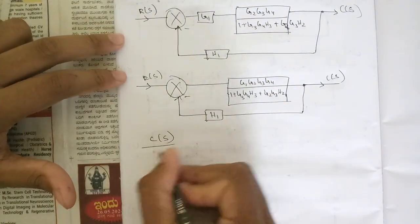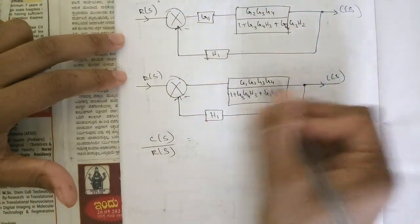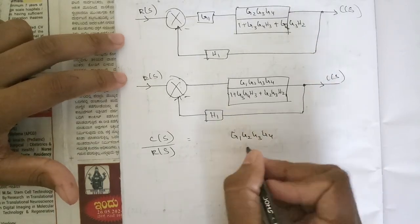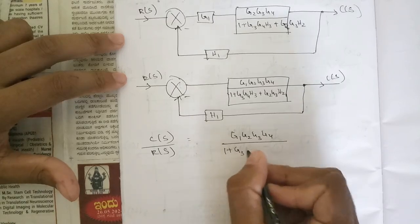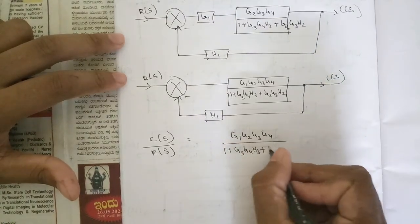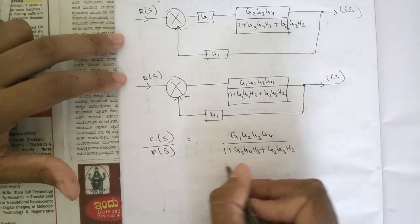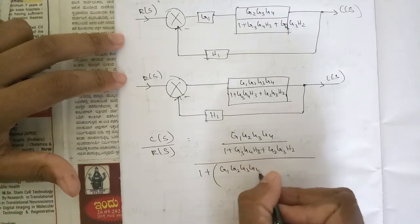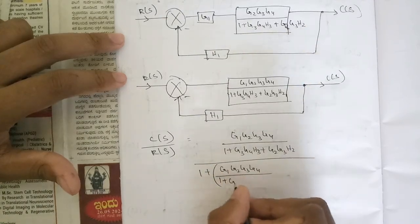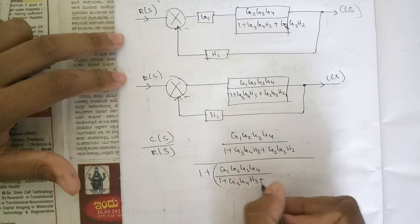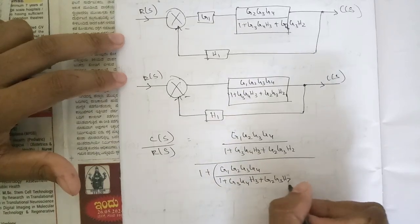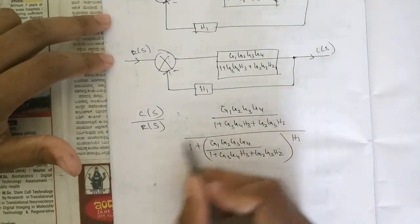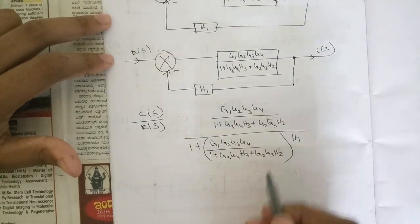So our final transfer function what we will be getting here is now, this is G of S, this is H of S, that is G1, G2, G3, G4 divided by one plus G3, G4, H3 plus G2, G3, H2, whole divided by one plus G1, G2, G3, G4 divided by one plus G3, G4, H3 plus G2, G3, H2 into H1. So again the same thing here, taking the LCM in the denominator and cancelling this term out.